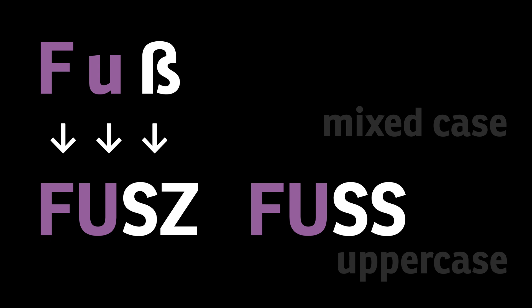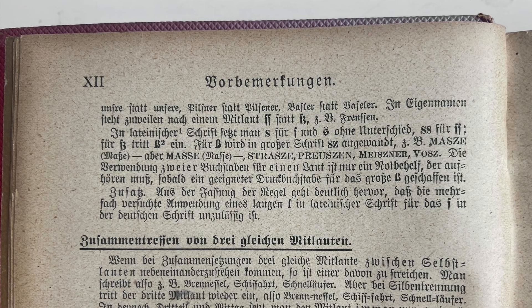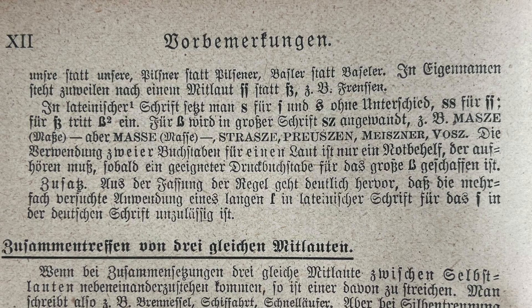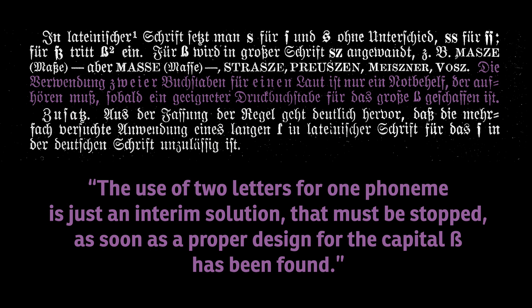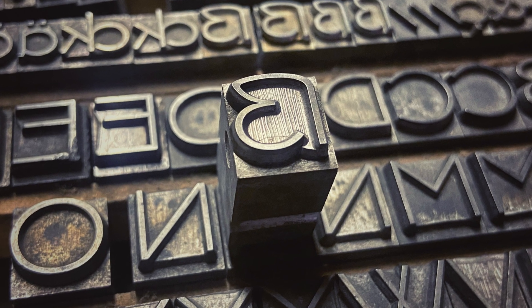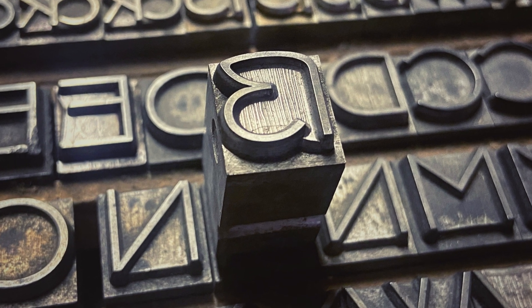Interestingly, people today often defend this practice as if it is the intrinsically right thing to do, since they don't know it was only introduced as a temporary workaround. Here is a page from the most used German dictionary explaining the situation in the early 20th century. It says: the use of two letters for one phoneme is just an interim solution that must be stopped as soon as a proper design for the capital sharp S has been found. Some foundries at the time took matters into their own hands and added capital sharp S letters to their fonts, but they weren't widely used.